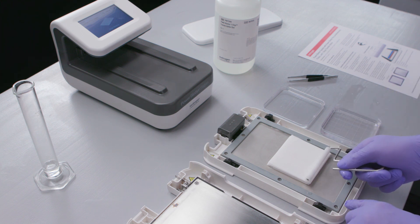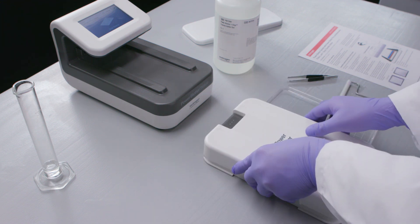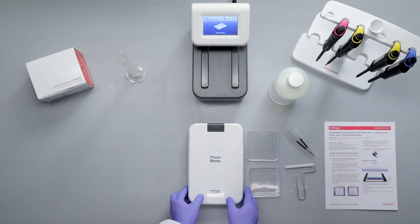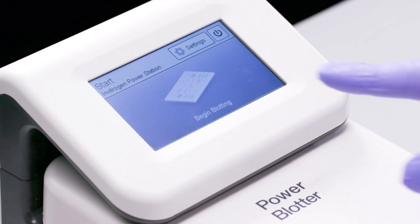If transferring more than one gel, ensure there is one centimeter of space around all stack edges. Place the cathode lid on top of the anode and gently press down on the top of the cassette to lock it into place. Slide the assembled cassette into the power blotter station.